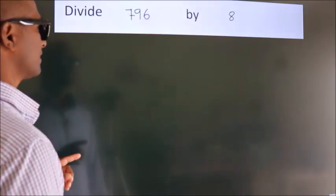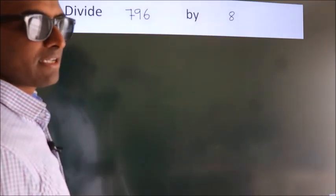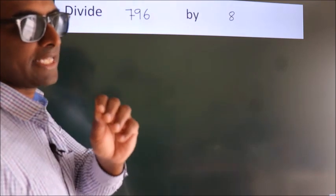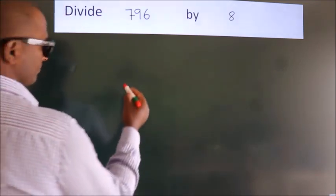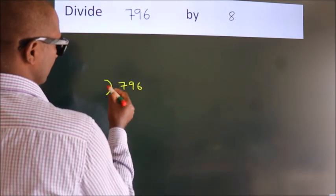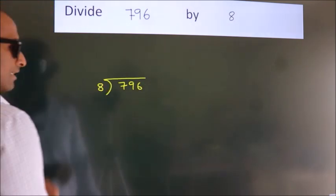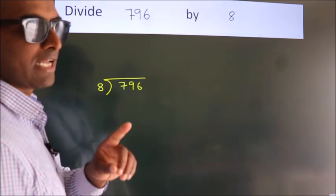Divide 796 by 8. To do this division, we should frame it in this way: 796 here, 8 here. This is your step 1.